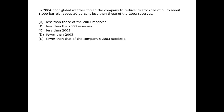Let's look for an answer choice to dispel this concern. C and D are both simple and therefore tempting. But wait a minute — grammatically, they compare 1,000 barrels with a year, the year 2003. We can't compare barrels with a year, so C and D have an objective defect.